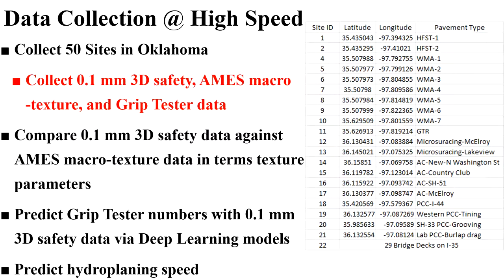This is an example of high-speed data collected with the 3D safety sensor, then compared to the AIMS macro texture data and used to predict grip tester numbers via the deep learning model.